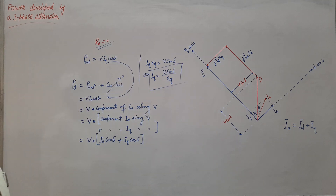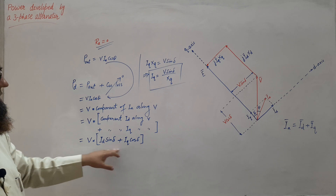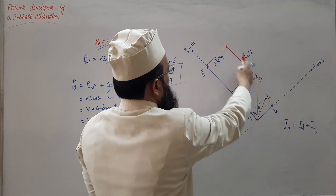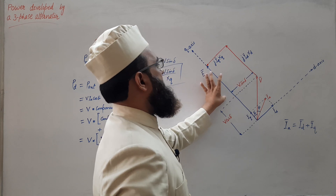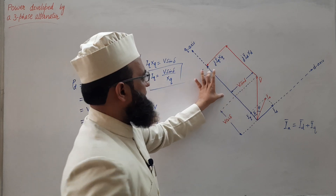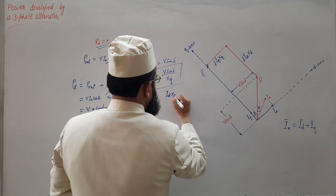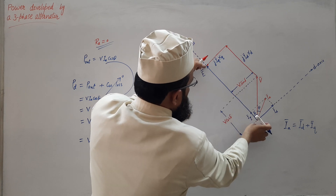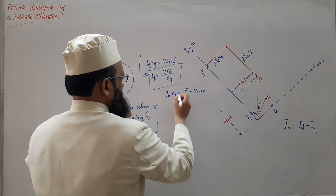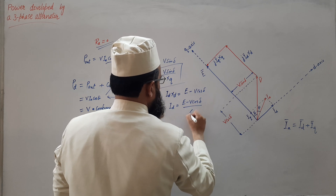Similarly, we derive id in terms of other known quantities. From the phasor diagram parallelogram, id·Xd equals E minus V·cos(δ), because this side equals E minus V·cos(δ). Therefore, id = (E − V·cos(δ)) / Xd.